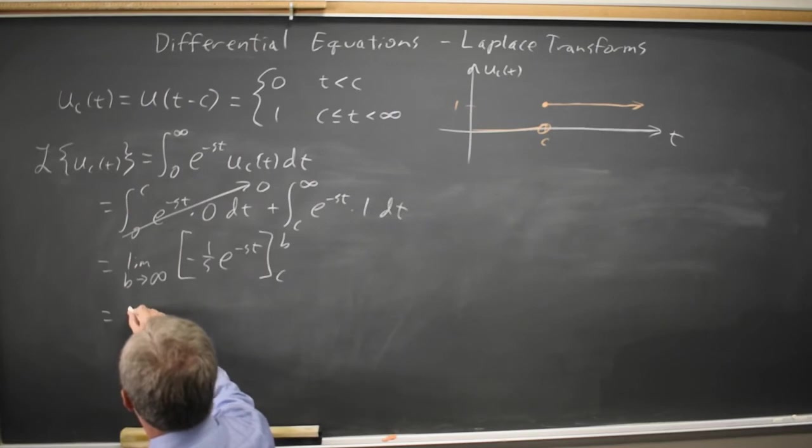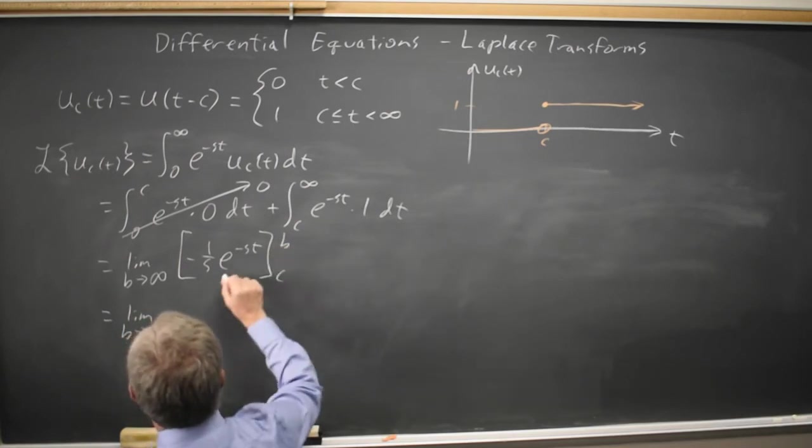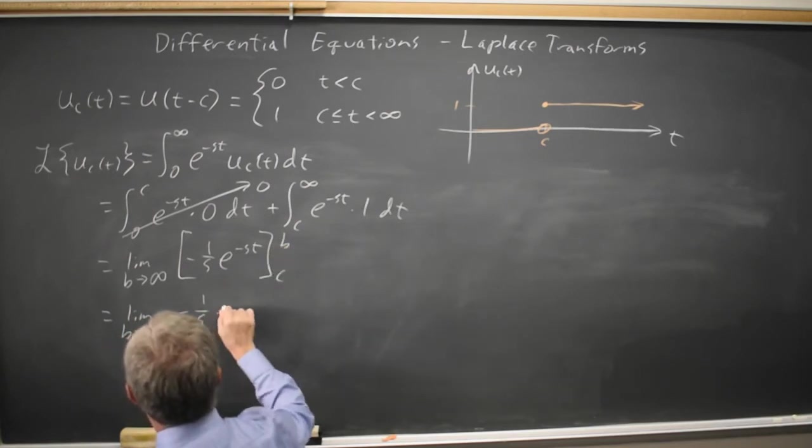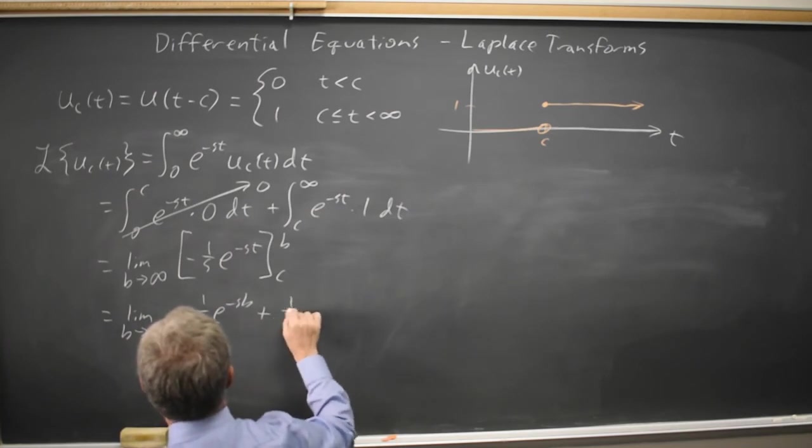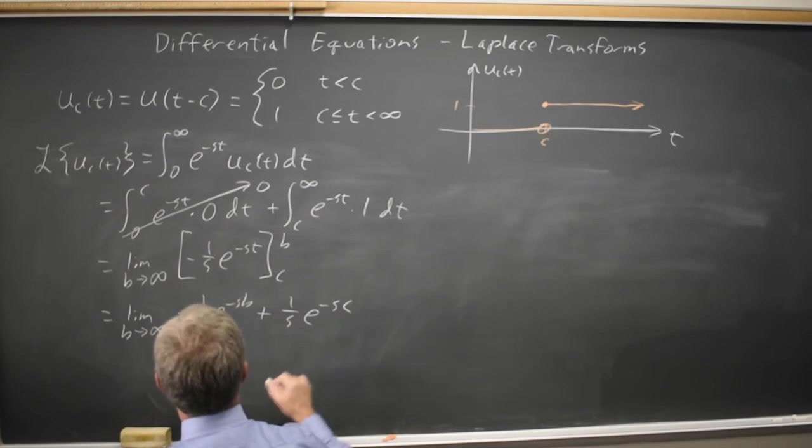Substituting the endpoints, the upper limit of integration is b, minus one over s, e to the negative sb, minus negative is plus one over s, e to the negative sc.